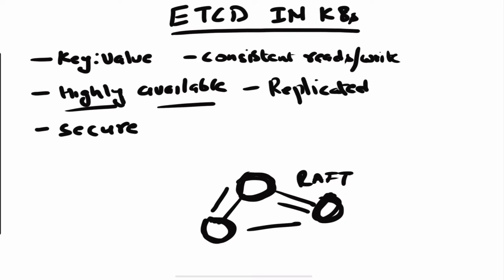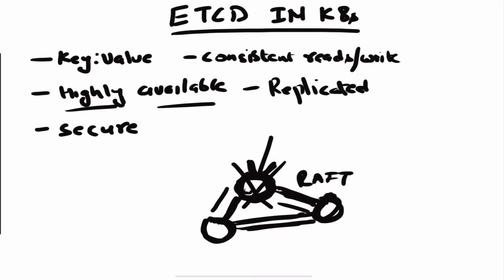The Raft protocol is used by a lot of systems nowadays to maintain leadership, and this is what gives etcd high availability. The data is replicated across all nodes — any data written on the leader node is replicated to the follower nodes as well. So if your master node goes down, one of the follower nodes becomes the new leader and your data stays intact. That is why etcd is a replicated, highly available data store.